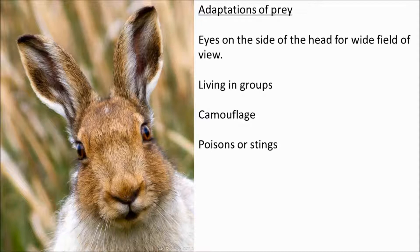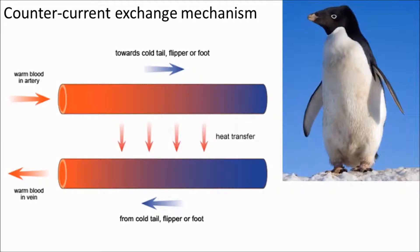Finally, let's talk about the counter-current exchange mechanism — a quite specific example of an adaptation. When penguins stand on the ice, their feet get really cold. If that chilled blood were pumped back up into the body, the penguin would freeze from the inside. To prevent this, warm blood moving down the legs in the arteries runs right next to the cold venous blood coming back from the feet, so the cold blood gets warmed before it returns to the body. This counter-current exchange happens in many species.